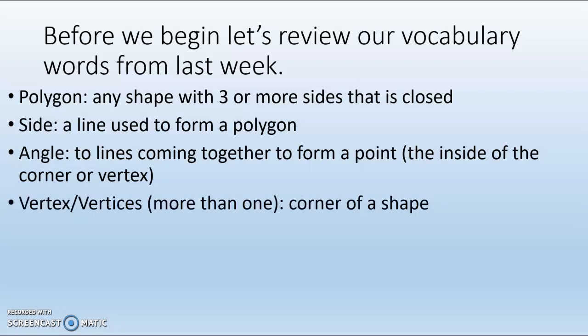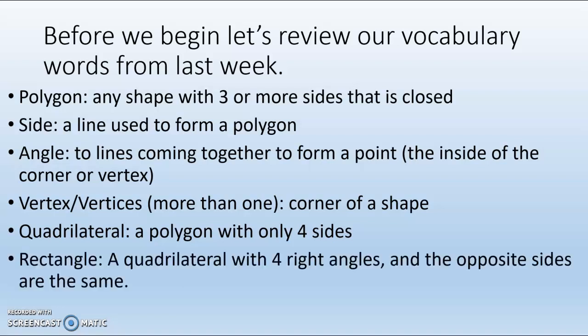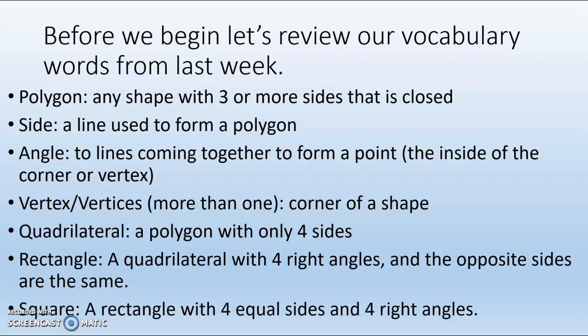A vertex or vertices, more than one, are the corners of a shape. Quadrilateral is a polygon with only four sides. A rectangle is a quadrilateral with four right angles and opposite sides are the same. And a square is a rectangle with four equal sides and four right angles.